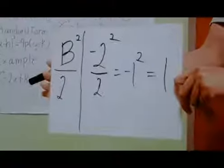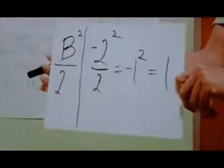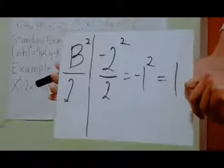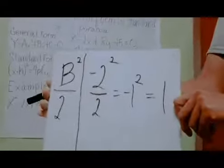To find the value of blank, we must do this formula: B over 2 square. So our B is negative 2. Negative 2 over 2 equals negative 1. Negative 1 square equals 1. So by putting the value of blank, which is 1,